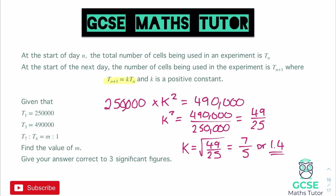So our iterative formula, if we were to write it back up here, T(n+1) is going to be equal to 1.4 lots of Tn. So all we're going to do is multiply by 1.4 each time. So that's the main bit of working out that we needed. It now tells us that the seventh value of t and the fourth value of t are going to be in the ratio m to 1. So all we need to actually go and do is find the seventh value and the fourth value.